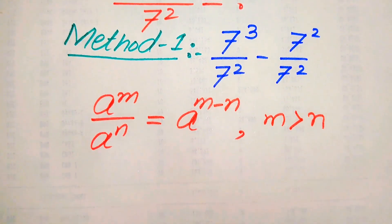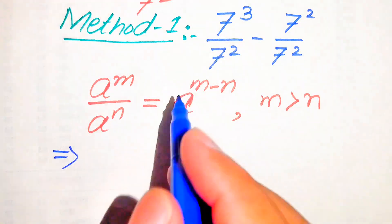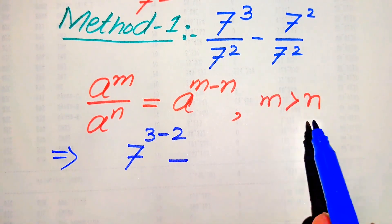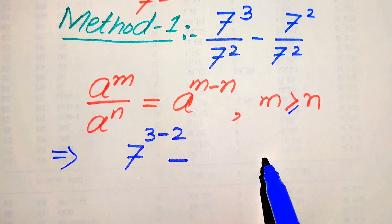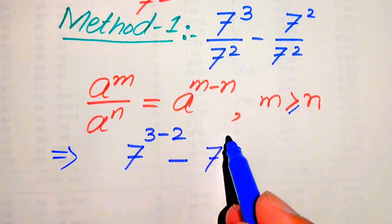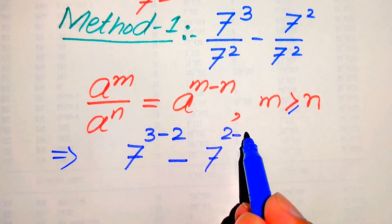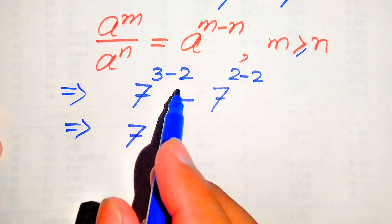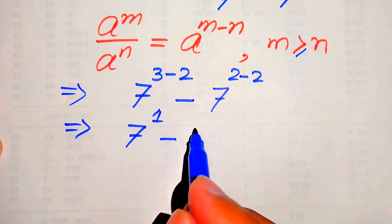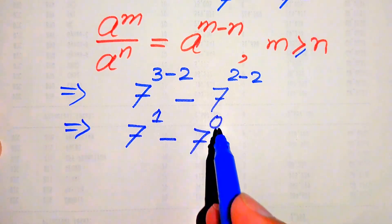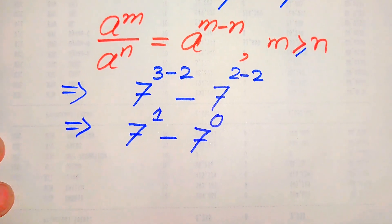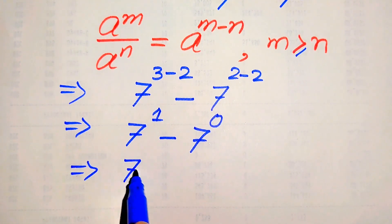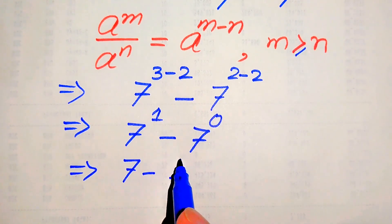According to this exponent law, we write our terms as: 7 to the power of 3 minus 2, minus 7 to the power of 2 minus 2. From here we get 7 to the power of 1 minus 7 to the power of 0. Since 3 minus 2 equals 1 and 2 minus 2 equals 0, we have 7 to the power of 1 equals 7, and 7 to the power of 0 equals 1.